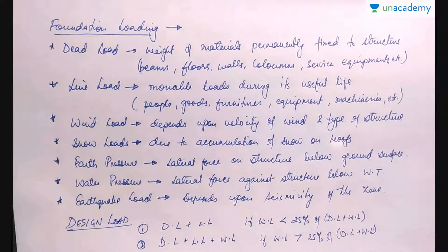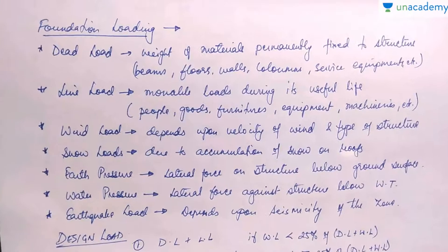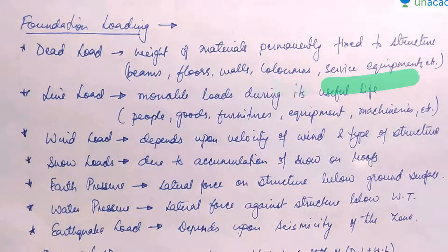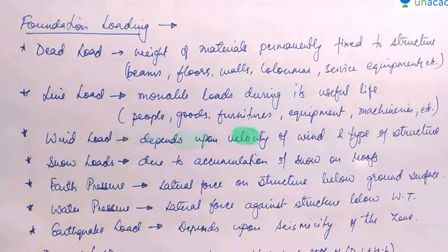The total loads acting on the foundation include: dead load — the weight of materials permanently fixed to the structure such as beams, floors, walls, columns, or attached service equipment; and live loads — all movable loads during the useful life of the structure, such as people, goods, furniture, and equipment. Wind load depends upon the velocity of wind and the type of structure.